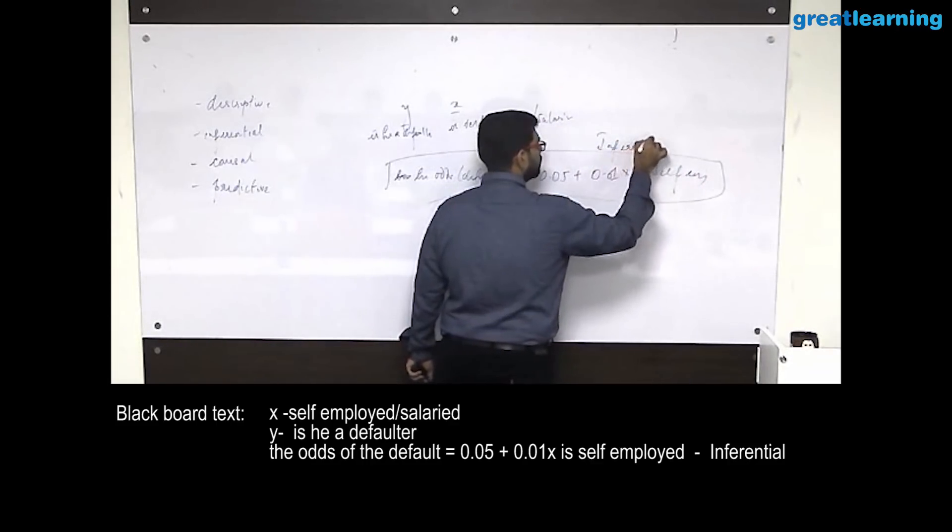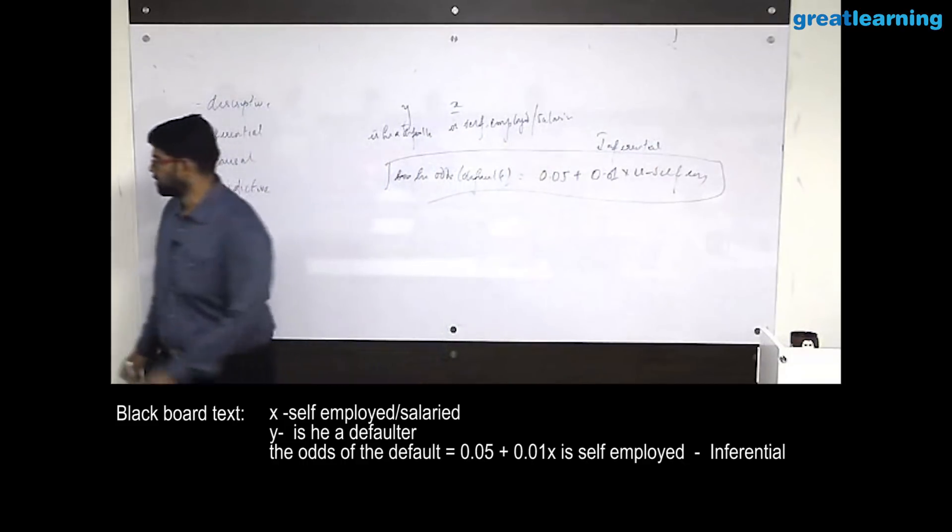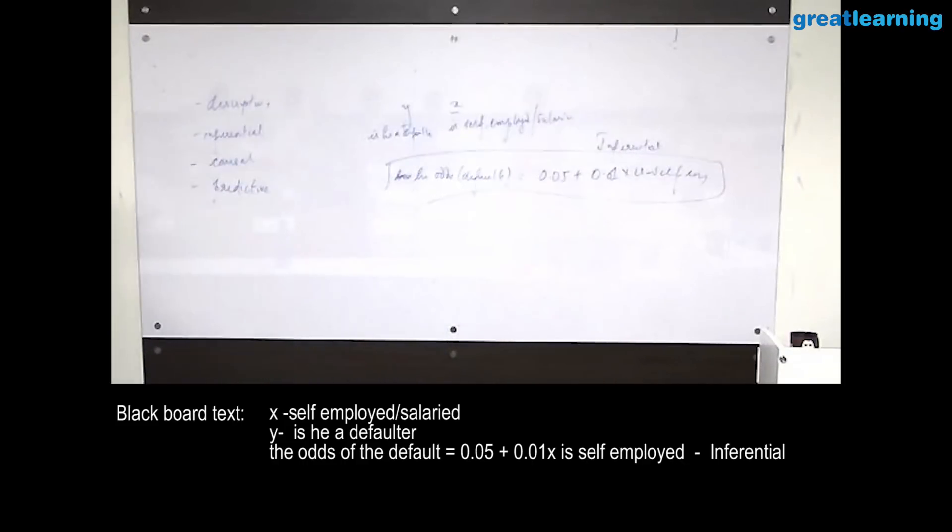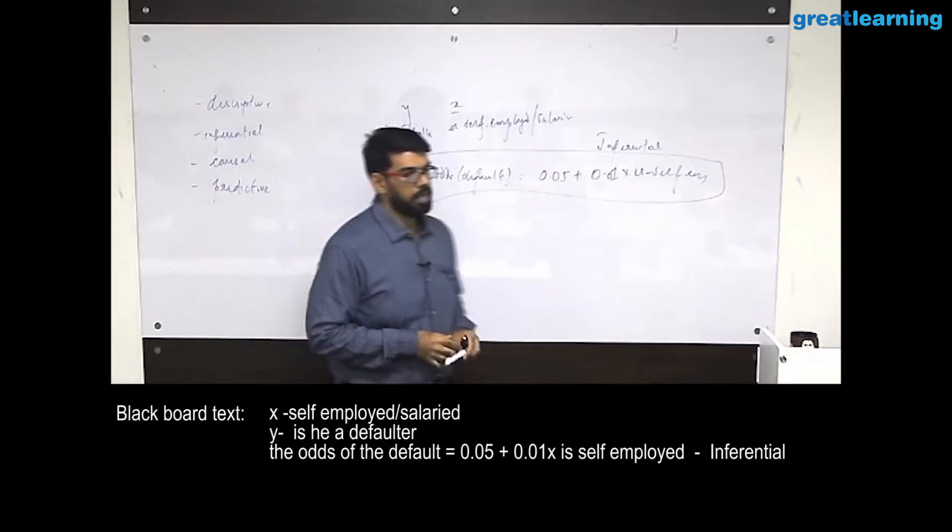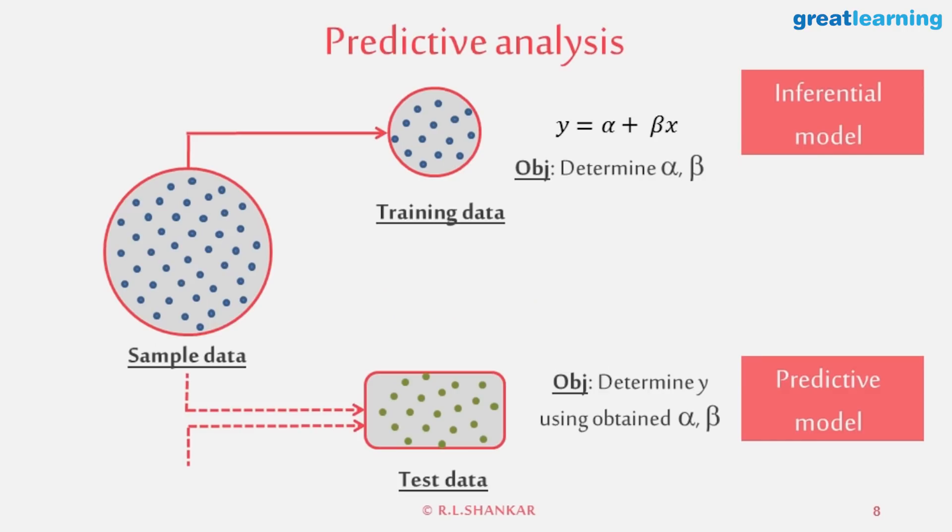All that I do in a predictive model is basically plug this into new data, which could either come from the original sample or an unseen sample, and then I convert and make my predictions. The only difference between a predictive model and an inferential model is how I determine the accuracy of the model.